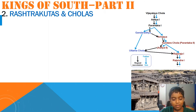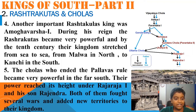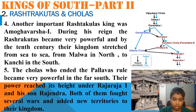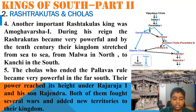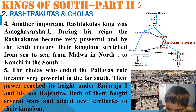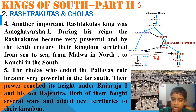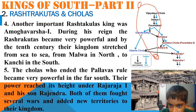Today I am going to cover Kings of South part 2 — Rashtrakotas and Cholas. Another important Rashtrakota King was Amoghavarsha I. During his reign the Rashtrakotas became very powerful, and by the 10th century the kingdom stretched from sea to sea — from Malwa in the north to Kanchi in the south, covering Tamil Nadu and stretching across.